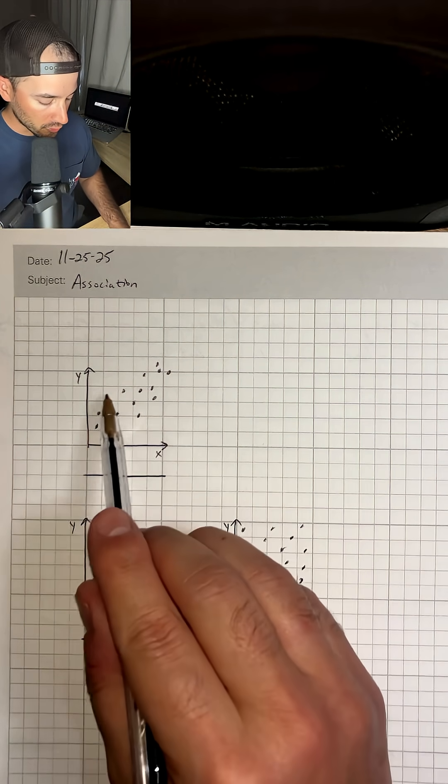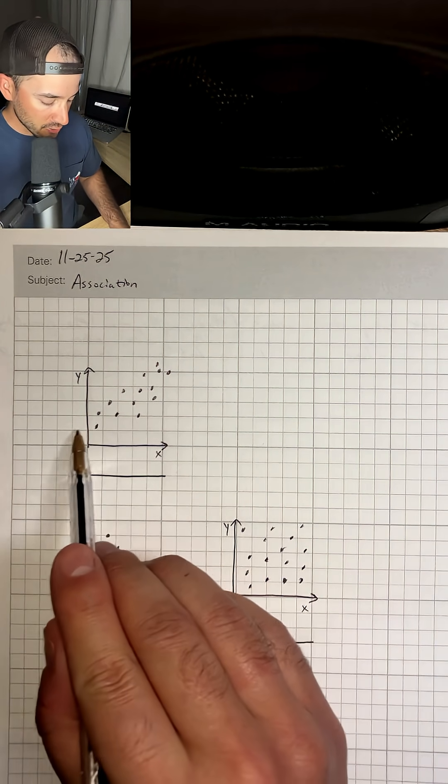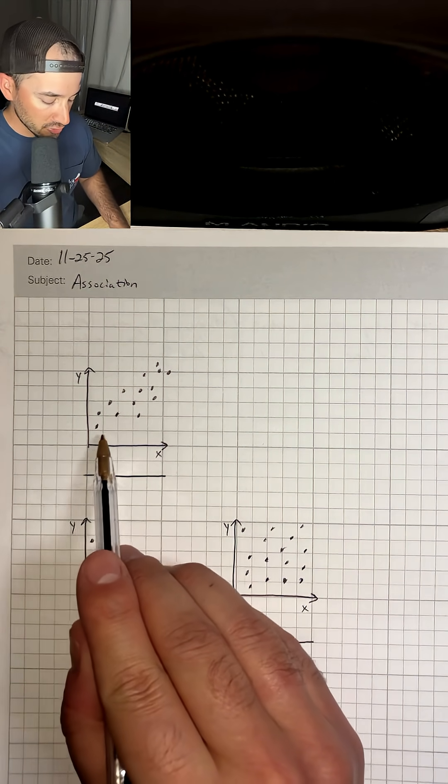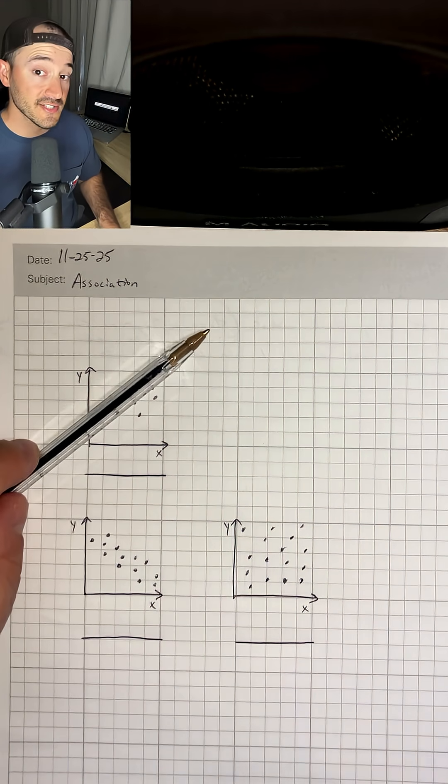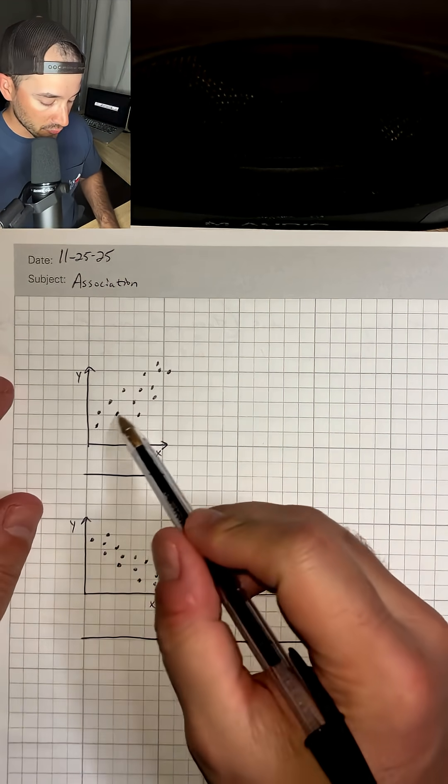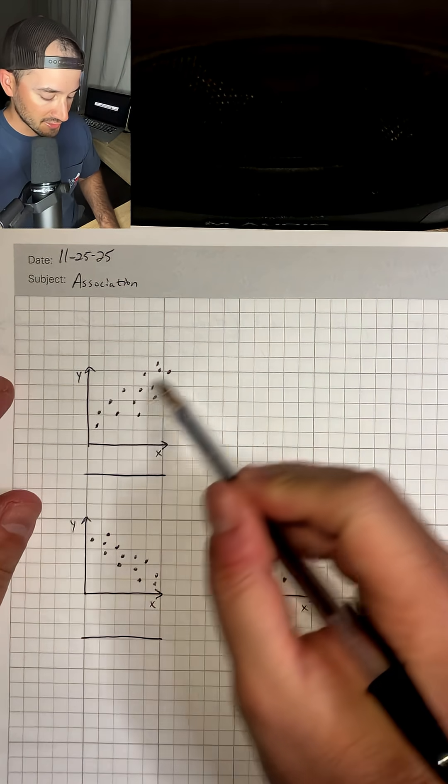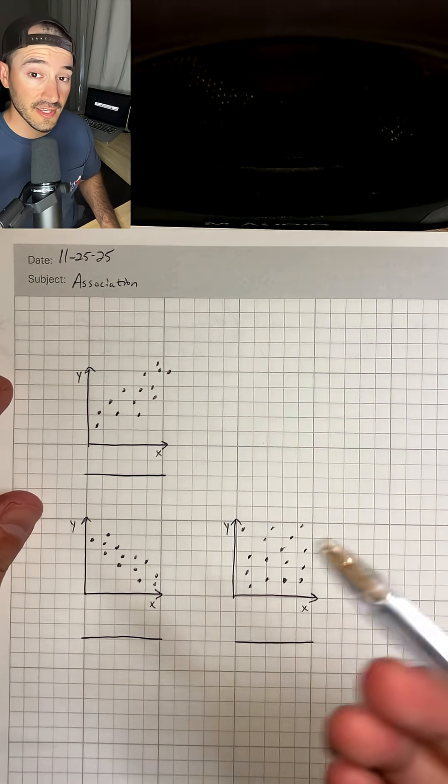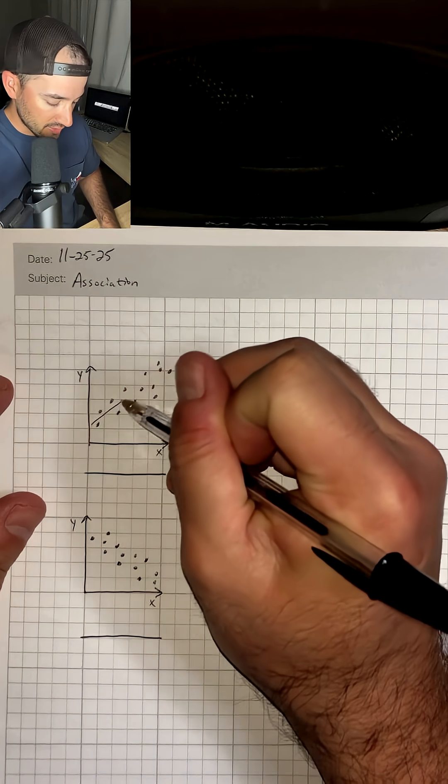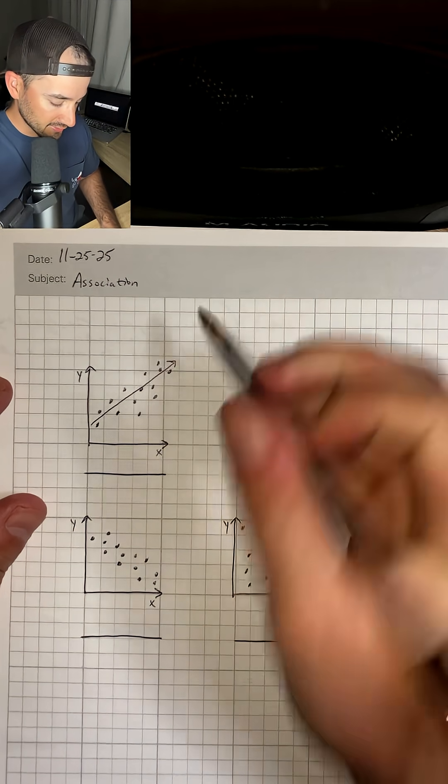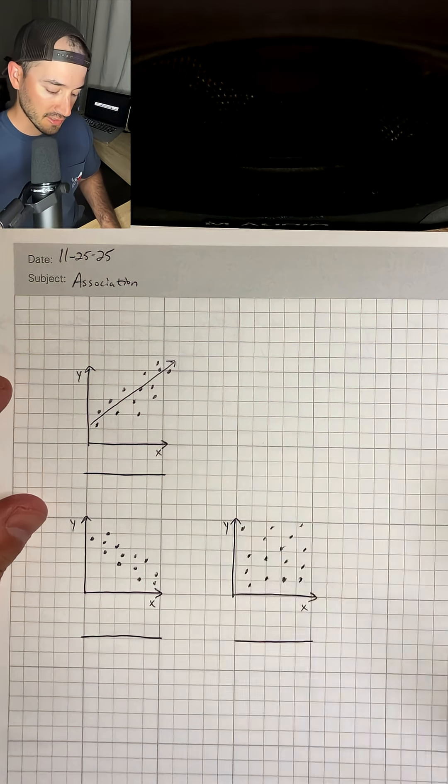So for our first example, as we go from left to right, what do you notice about the points? They're increasing almost like it has a positive slope, right? Now they're not exactly in a perfect line, but they are close enough so that we can see the pattern and we can tell that generally as X increases, Y is also increasing.